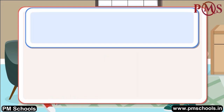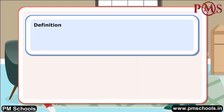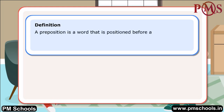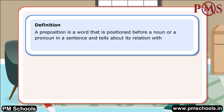Definition: A preposition is a word that is positioned before a noun or a pronoun in a sentence and tells about its relation with another word in the sentence placed nearby.